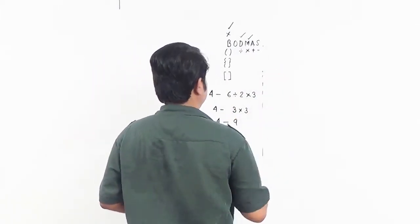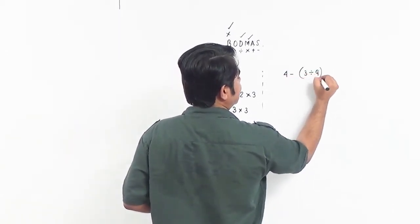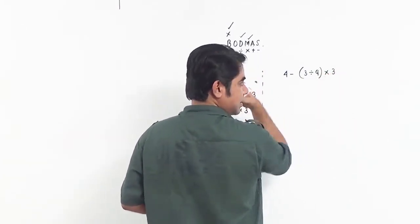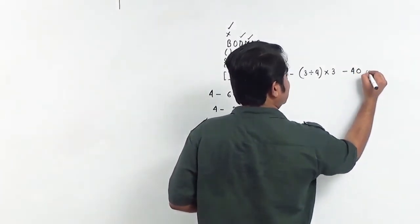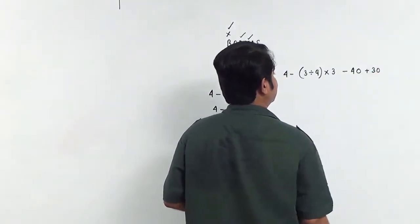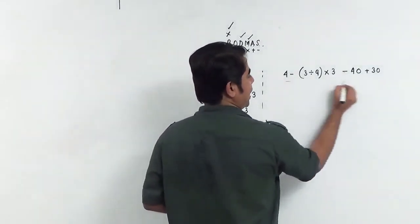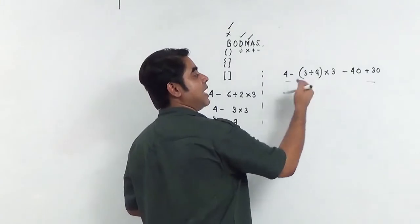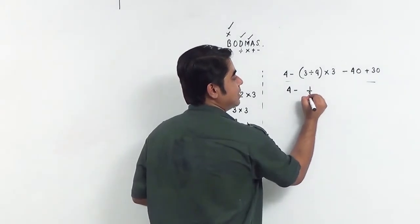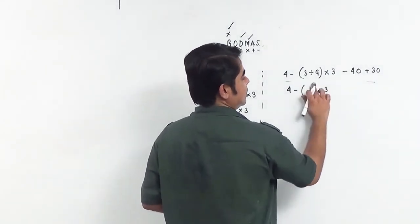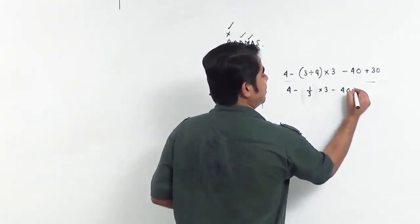Let us take one more example: 4 minus 3 divided by 9 into 3 minus 40 plus 30. We have pretty much all the operations here. Scanning from left to right — do we have a bracket? Yes, we have a bracket. We will evaluate the bracket first. This simplifies to 3 divided by 9, which is 1 by 3, into 3. We have evaluated the bracket and therefore we will remove the bracket.